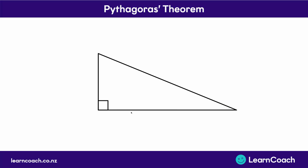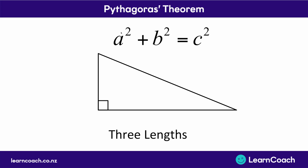Our first step is going to be labelling our three lengths so that we can use our formula: a squared plus b squared equals c squared. This formula is Pythagoras' theorem, and it's really important you memorise this because it's going to come up in your exams. Now a, b, and c just refer to the three different sides, so you're going to need to know how to label them.